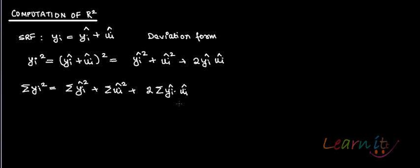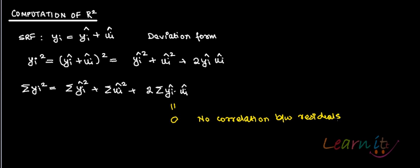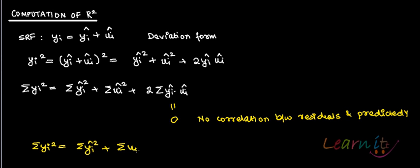Note that we have already proved that the cross-product term is equal to zero — that is, there is no correlation between residuals and predicted y. So what is left is: summation of yi-squared equals summation of yi-hat-squared plus summation of ui-hat-squared.